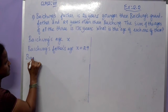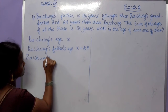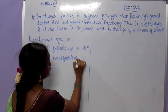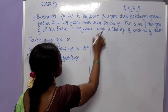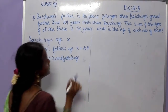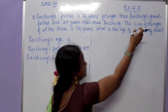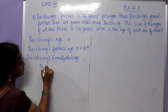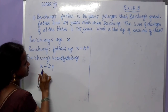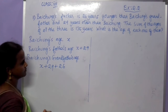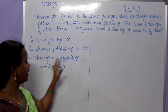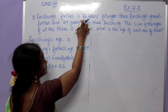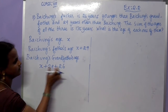Next, Pacham's grandfather's age. Pacham's father is 26 years younger than Pacham's grandfather. So Pacham's grandfather's age is the father's age plus 26, which is x plus 29 plus 26. We add 26 because Pacham's father is 26 years younger than the grandfather.